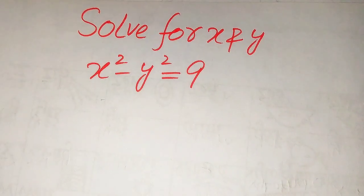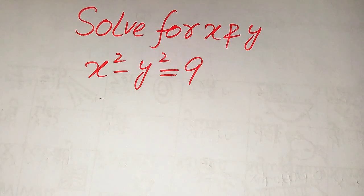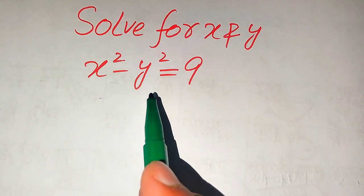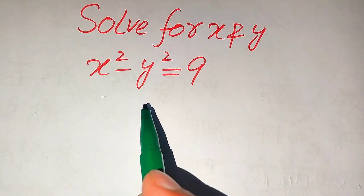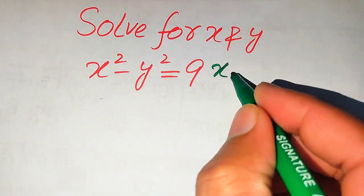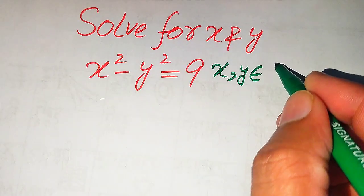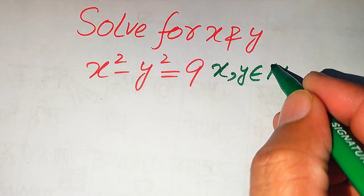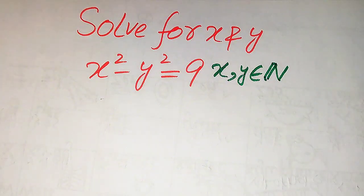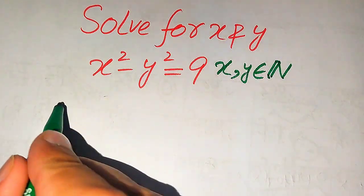Hello everyone. How to solve this problem for the values of x and y if we have x squared minus y squared equals 9. We solve this problem for the values of x and y, but remember that x and y must belong to the natural numbers. So we solve this problem for natural values of x and y.